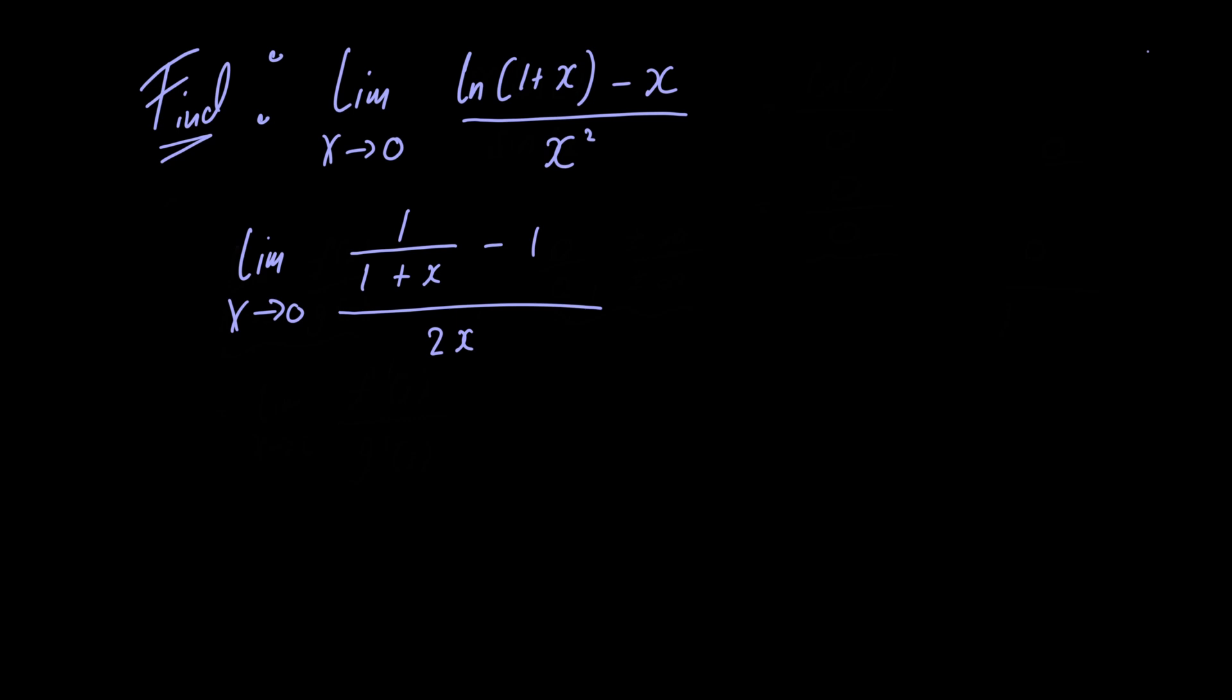We can simplify the numerator by cross-multiplying. Doing so we have the limit as x approaches 0 of 1 minus 1 minus x divided by 1 plus x, all divided by 2x.